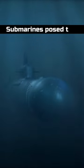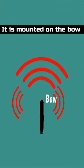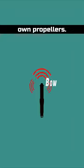During the Cold War, submarines posed the biggest threat to any nation. The sonar is the submarine's eyes in the water. It is mounted on the bow to avoid noise from its own propellers.